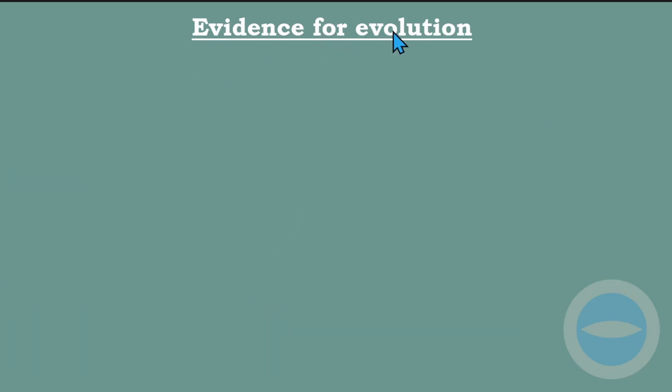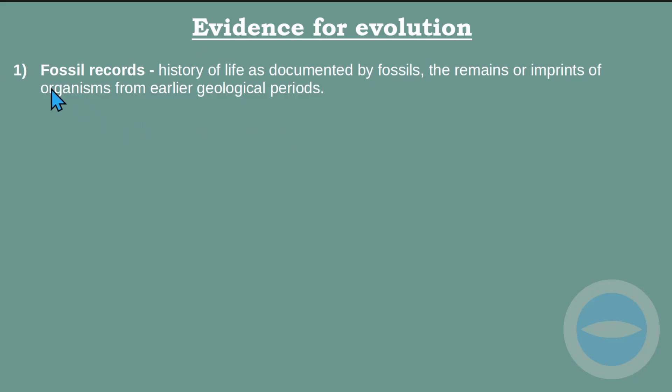Now we will be talking about the evidence for evolution. When scientists do tests, there must be some evidence. Because if we talk about something that happened more than a million years ago, it's not easy to just say this thing happened — we need some evidence. Evidence number one: fossil records.